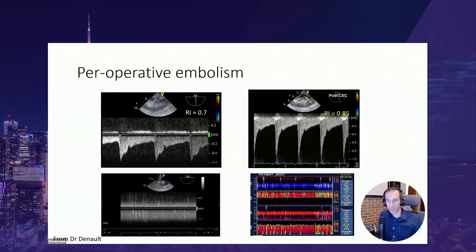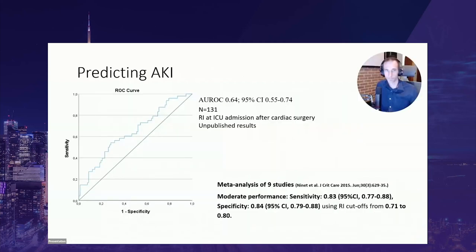Intraoperative monitoring may have additional applications. Here is a case where at the start of surgery the renal resistive index was almost normal at 0.7, but during the case multiple air emboli were detected on transcranial Doppler and also as high-intensity signals on kidney Doppler. After cardiopulmonary bypass, there was an increase in the renal resistive index to 0.85 compared to the preoperative value, and this patient went on to develop acute kidney injury in the postoperative period.